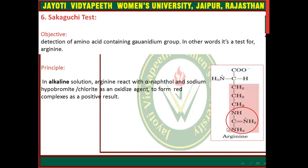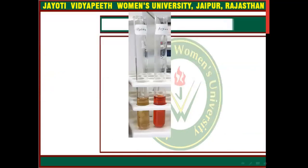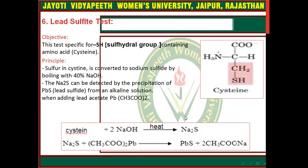This is the complex which is responsible for giving a positive test. These are the results: glycine will show this color, but arginine will give this color.